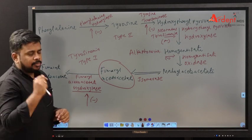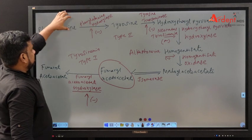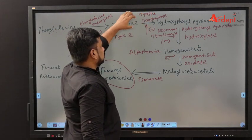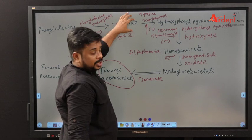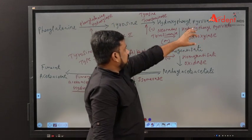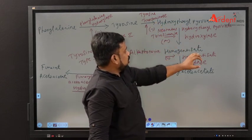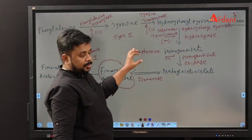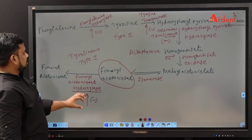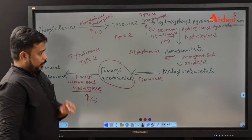To recap: a defect in phenylalanine hydroxylase leads to phenylketonuria. A defect in tyrosine transaminase leads to tyrosinemia type 2. A defect in fumarylacetoacetate hydroxylase leads to tyrosinemia type 1.